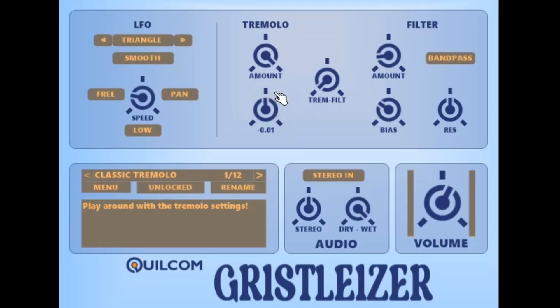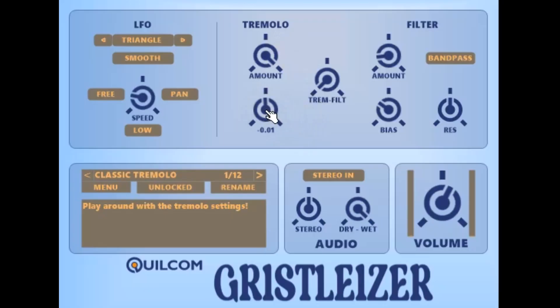The tremolo effect, which is amplitude modulation, has just two controls. One is the amount or depth of tremolo, and the other one is the bias, which sets the operating point for the tremolo from the LFO.